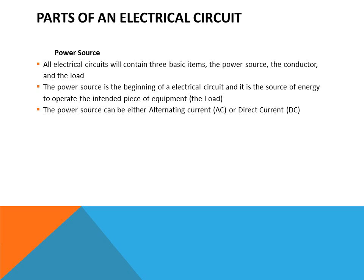The power source can be either AC or DC power. The power source is always available — sometimes called potential energy because it's there but not being consumed. All electrical circuits contain three basic items: the power source, the conductor, and the load. The power source is the beginning of the electrical circuit and the source of energy to operate the intended piece of equipment, the load.